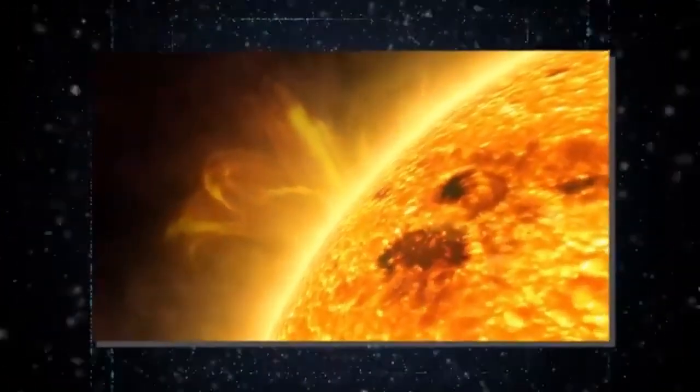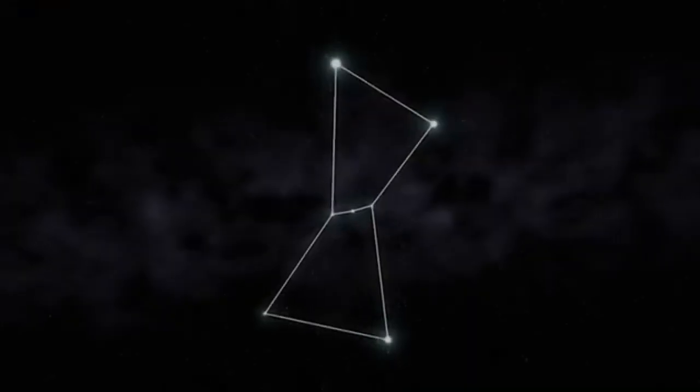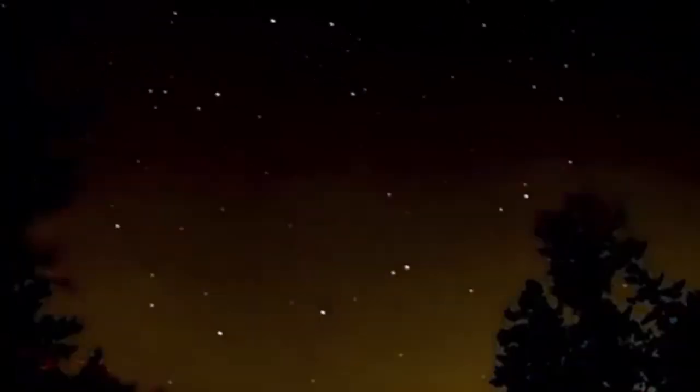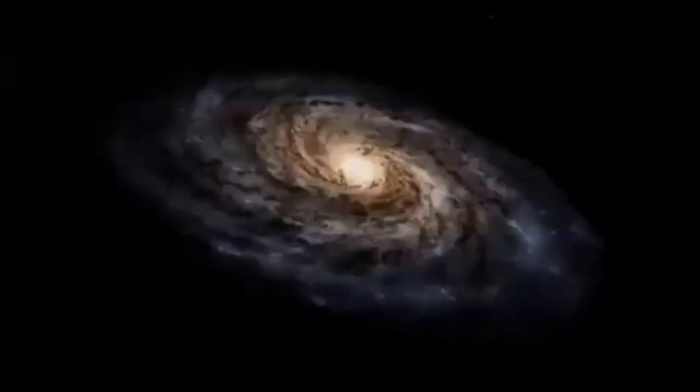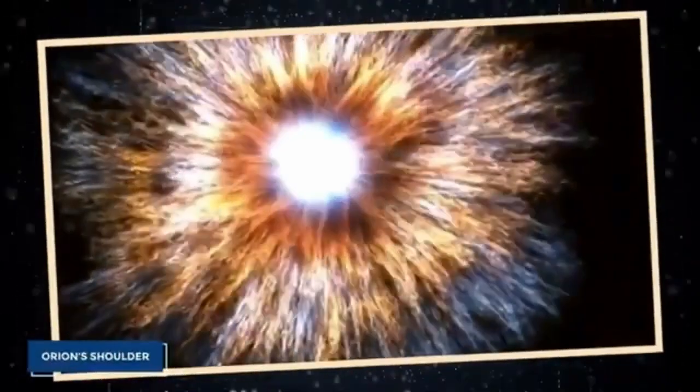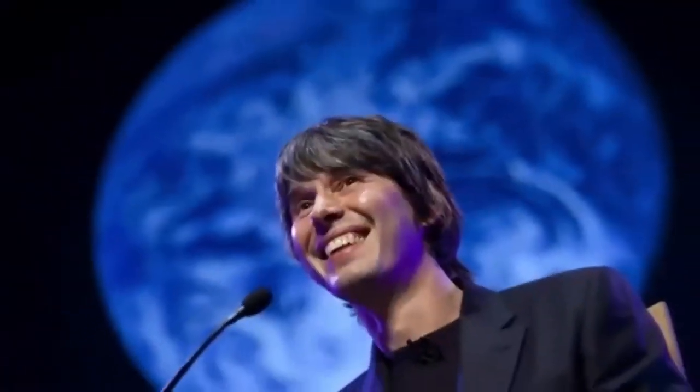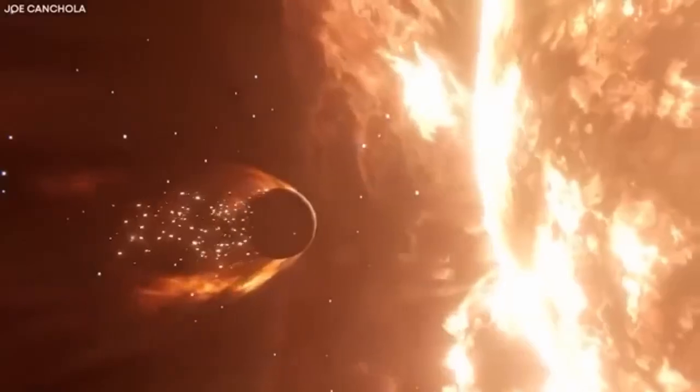Now here's where things get even more intriguing. Betelgeuse isn't one to stay put. Nope. It's a runaway star that's been kicked out from its cozy birthplace in the Orion OB1 Association. The same neighborhood as Orion's belt stars. It's racing through the interstellar medium at a mind-boggling speed of 30 kilometers per second, leaving behind a bow shock over four light years wide. Back in 1920, Betelgeuse earned another title.